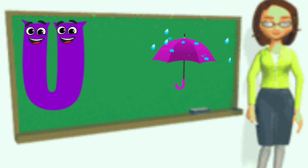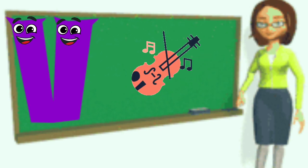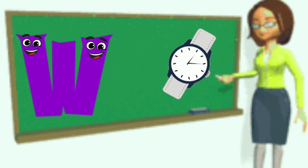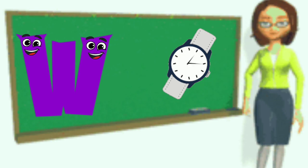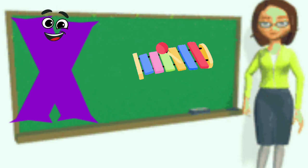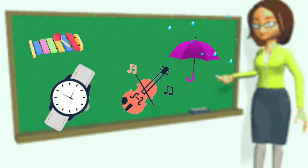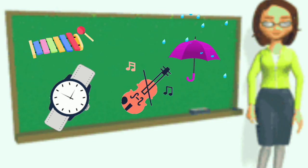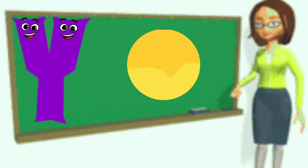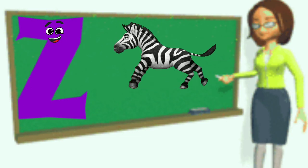U is for Umbrella, U-U-Umbrella. V is for Violin, V-V-Violin. W is for Watch, W-W-Watch. X is for Xylophone, X-X-Xylophone. Y is for Yellow, Y-Y-Yellow. Z is for Zebra, Z-Z-Zebra.